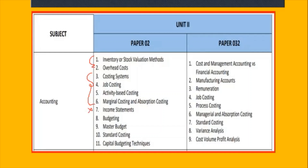The income statements most likely are going to be marginal cost and absorption cost income statements. Module three is budgeting, master budget, standard cost, and capital budgeting techniques. The whole focus of my revision will be on these topics with you in preparation for your exam, but you should not neglect other areas because you also have multiple choice questions to prepare for.